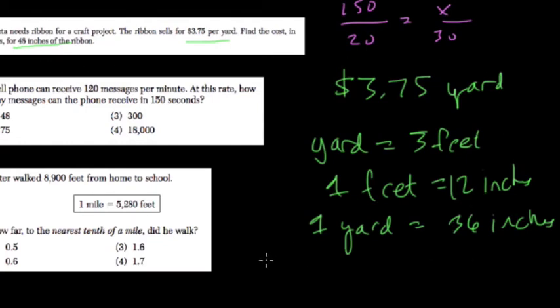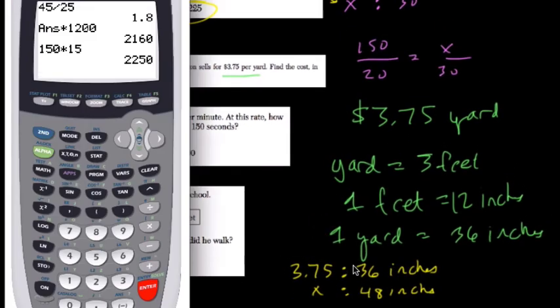just set up a ratio. We know it's $3.75 for every 36 inches. We want to know what the cost x is going to be if you have 48 inches. So we want to find how many times bigger 48 is